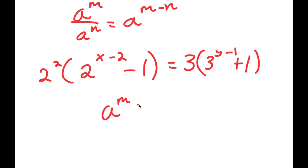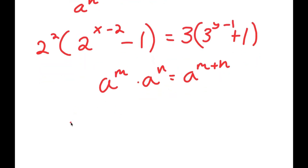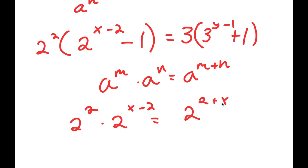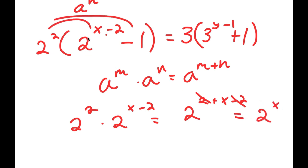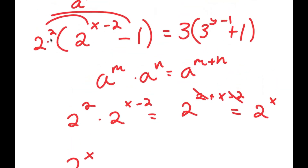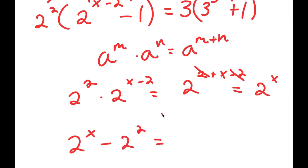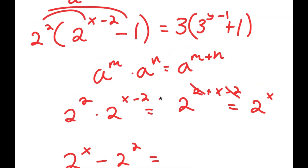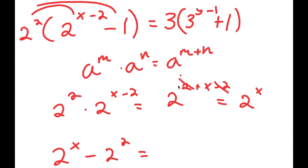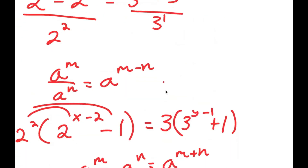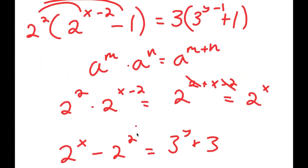Using the rule a to the power of m times a to the power of n equals a to the power of m plus n, we have 2 squared times 2 to the power of x minus 2, which equals 2 to the power of 2 plus x minus 2. The 2 and negative 2 cancel, giving 2 to the power of x. So 2 squared times 2 to the power of x minus 2 is 2 to the power of x, and 2 squared times negative 1 is negative 2 squared, all equal to 3 to the power of y plus 3.